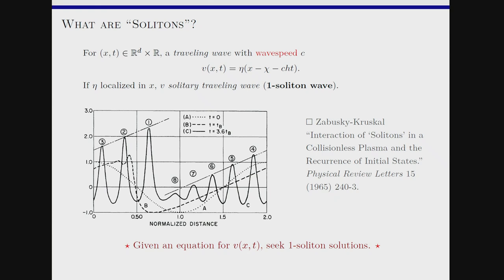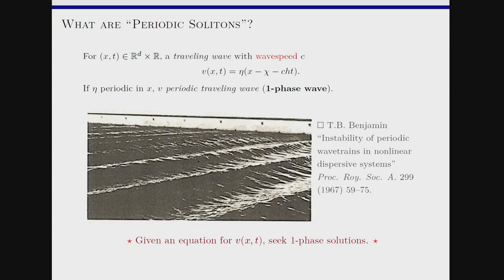The term soliton was introduced by Zabusky and Kruskal, where they studied not this initial value problem on the board but the same initial data for the KdV equation. This is a plot of the trajectory of the initial data 2cos(x) for the KdV equation after some finite amount of time. They point out there's a bunch of bumps — eight of them — and those are called solitons, which are interacting. Technically, these are periodic solitons because they studied periodic boundary conditions. A periodic soliton is a periodic traveling wave: any shape eta that moves in some direction with a fixed speed, with the waveform eta being periodic. We call these for short a one-phase wave.